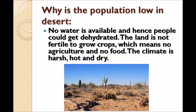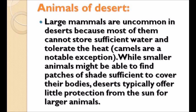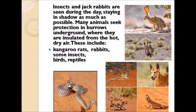Large mammals are uncommon in deserts because most cannot store sufficient water or tolerate the heat. Camels are a notable exception. Smaller animals may find patches of shade to cover their bodies, but deserts typically offer little protection from the sun for larger animals. Insects and jackrabbits seen during the day stay in shadow as much as possible. Many animals seek protection in burrows underground, insulated from the hot dry air — including kangaroo rats, rabbits, some insects, birds, and prairie dogs.